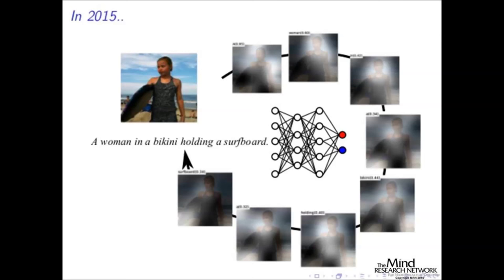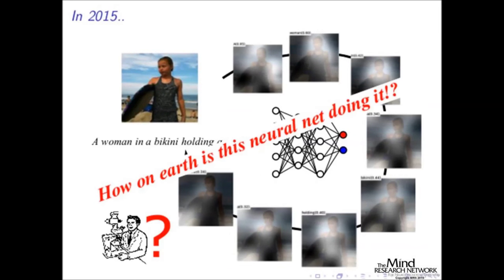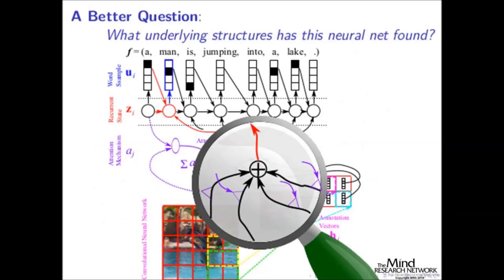The question is: how does this single neural net do what Mich needed all that complexity for? What kind of structure has the neural net found from the data — given that we never provided any explicit alignment? It just had to extract it from the data itself.